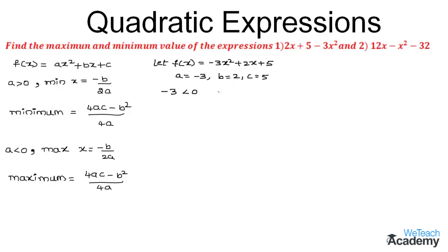So we can see that it has the maximum value at x = -b/2a. Here in this expression, the value of -b/2a would be -2 divided by 2 into -3. We can cancel the minus signs in the numerator and denominator and we get x = 1/3.